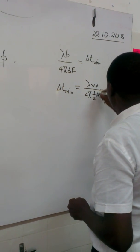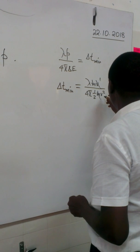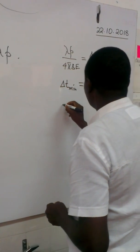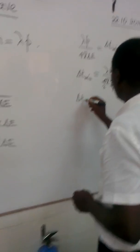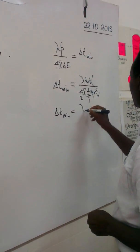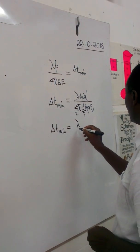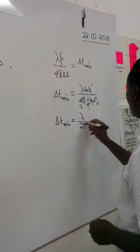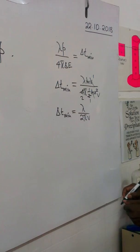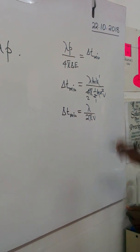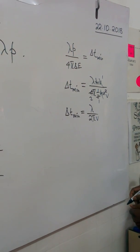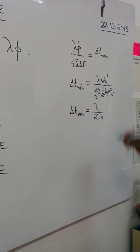The mv terms would cancel out with the 2, leaving us with t-minimum, the uncertainty in time, equal to lambda over 2pi times v. This means the uncertainty in time is directly proportional to wavelength and inversely proportional to velocity, which makes a lot of sense.